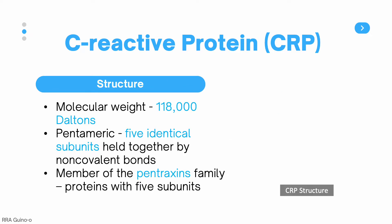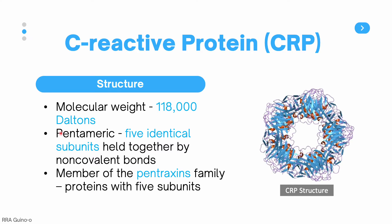Let's now talk about the structure of CRP. Its molecular weight is around 118,000 daltons, and it has a pentameric structure, meaning it has five identical subunits held together by non-covalent bonds. You can see the molecular structure of CRP in this figure — notice each of the five individual monomers. CRP is also a member of the pentraxins family, which are proteins with five subunits.